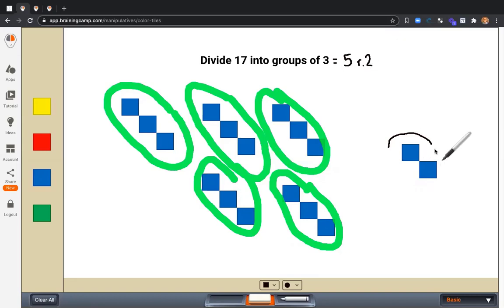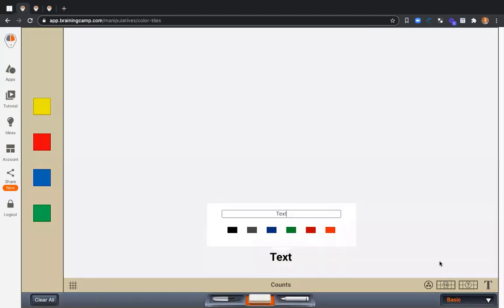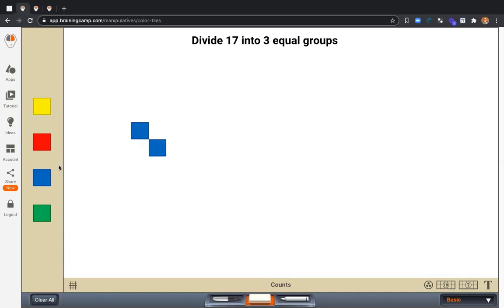I have 2 remaining or a leftover from my division. Now, instead of beginning with 17 and dividing it into groups of 3, I'm going to divide 17 into 3 equal groups. And notice how this looks a little different. So let me get my 17 on the board.